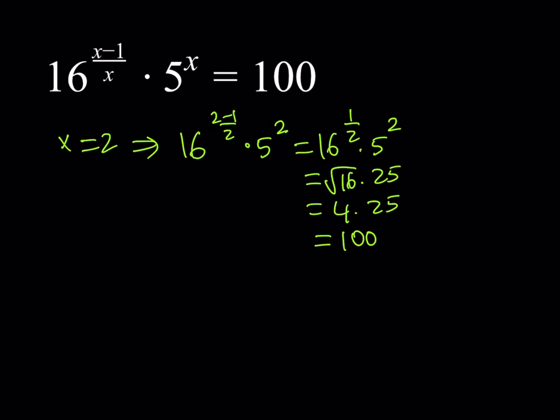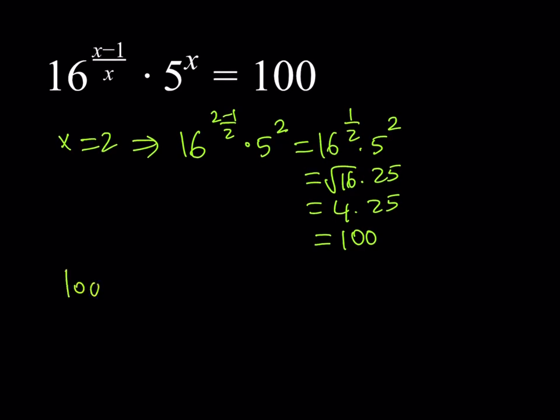Here's what I'm going to do. Since we have some variables in the exponents, I'm going to be logging both sides. It's a good method. If you have exponential equations, you can pretty much log both sides all the time. So, I'm going to log 16 to the power x minus 1 over x multiplied by 5 to the power x. And then on the right-hand side, I have 100. And by the way, when I don't write the log base, I mean base 10.